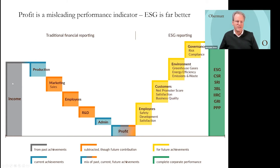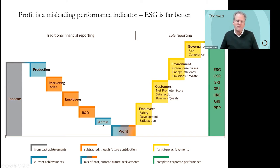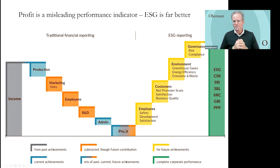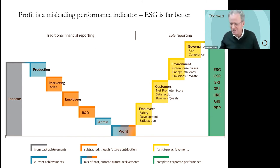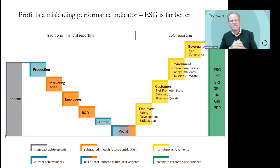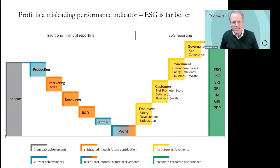This profit metric nowadays accounts for 50 to 80 percent of external communication and executive compensation when displaying performance. But we believe profit is a very ambiguous, diluted metric of your actual performance. While income is from the past, your production cost and administration cost may be from the present, but many things you actually do in the company are for the future - and you deduct those. So the less you do for the future, the higher your profit. This is a big problem.